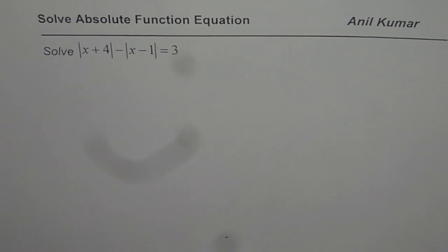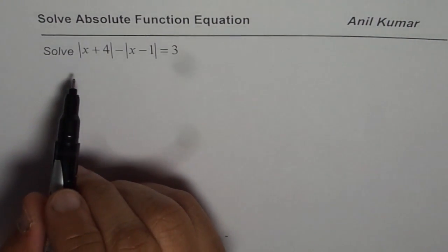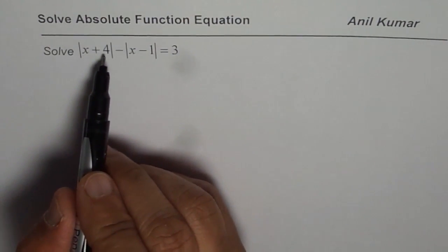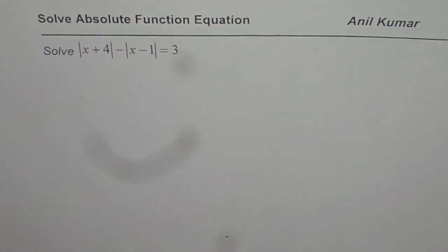Anil Kumar will solve an absolute function equation which has two absolute functions within it. The equation is absolute value of x plus 4 minus absolute value of x minus 1 equals 3.